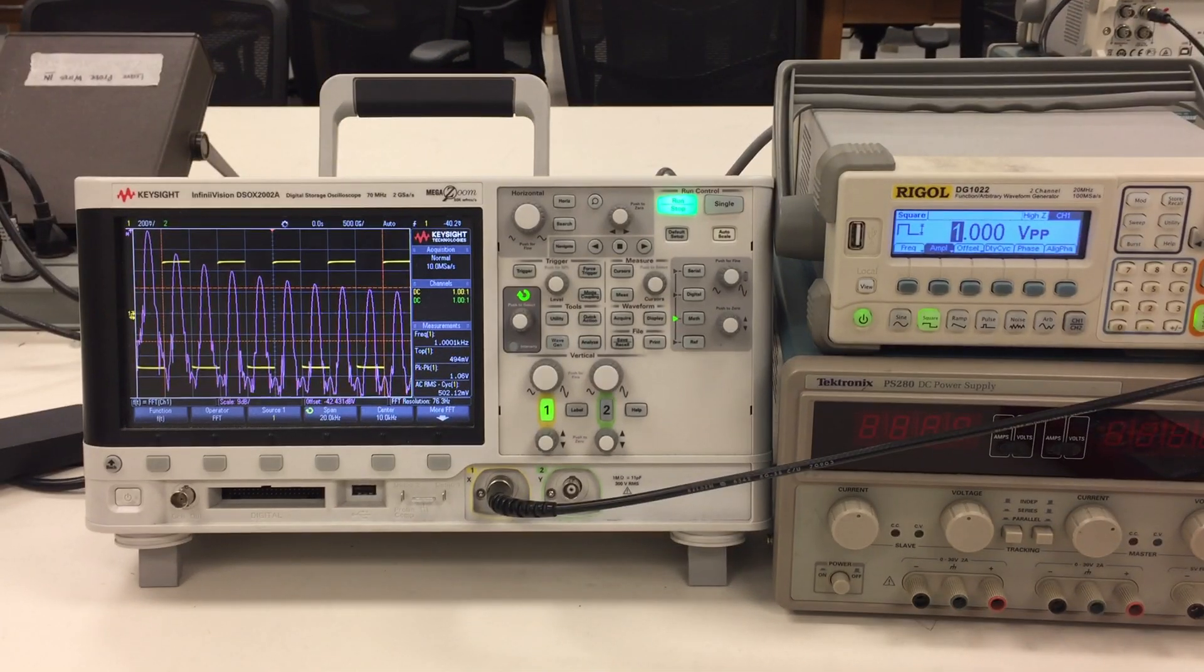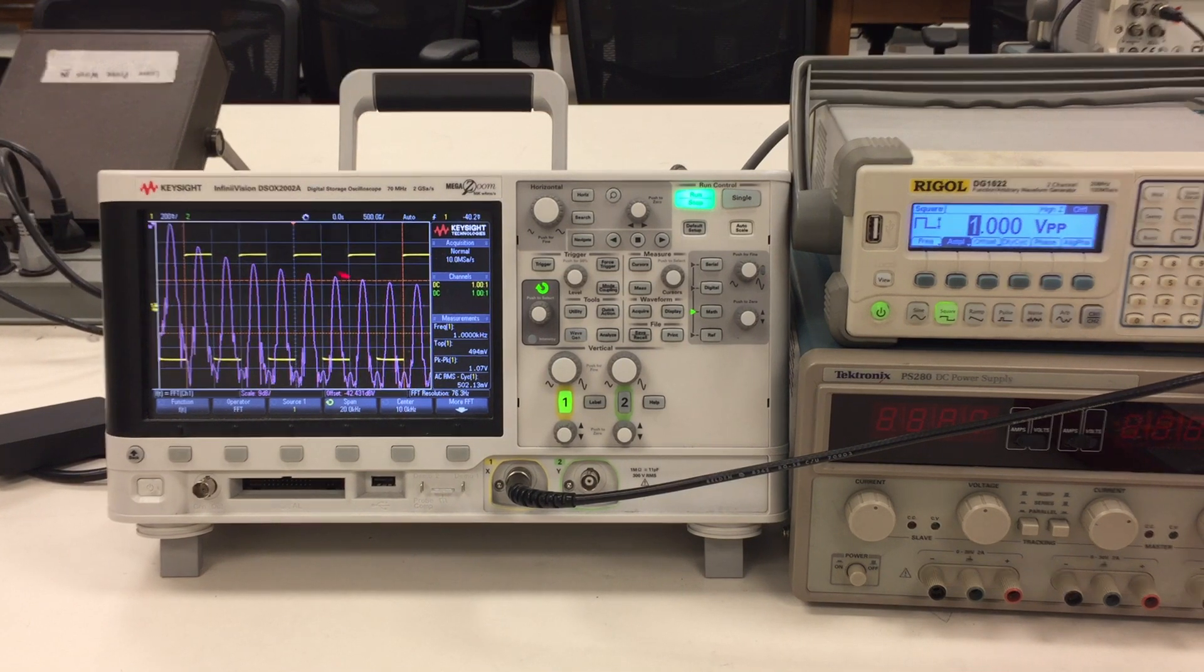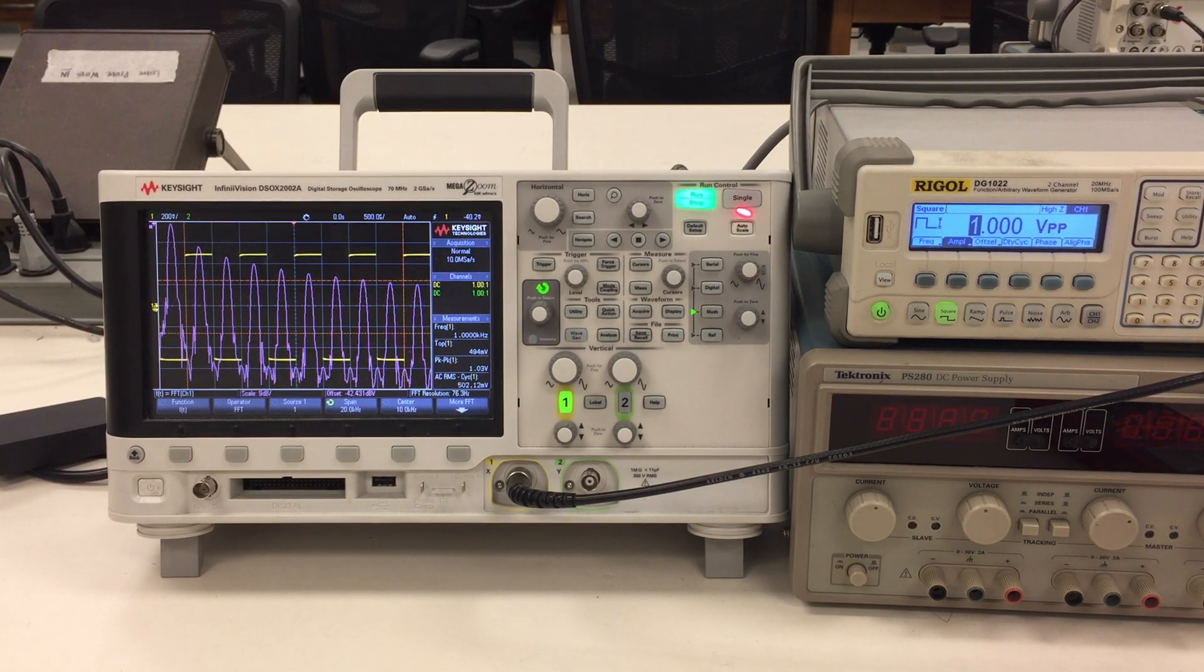I've already completed the setup here, so you can see that in the oscilloscope screen, you have the yellow curve as the original square wave in time domain, the x-axis is in time.